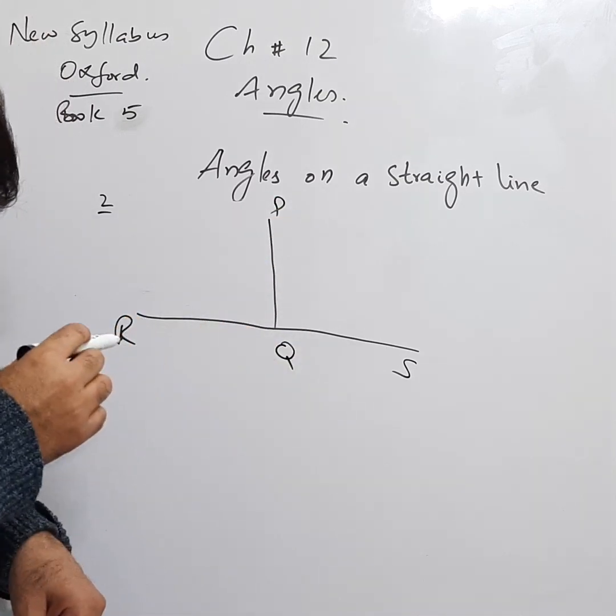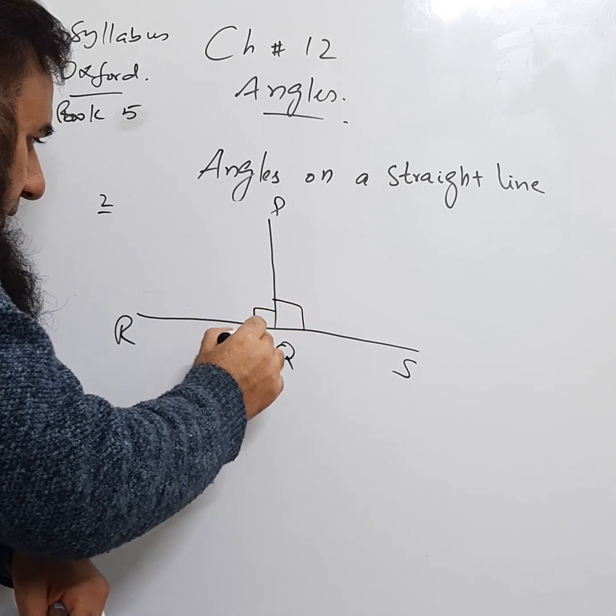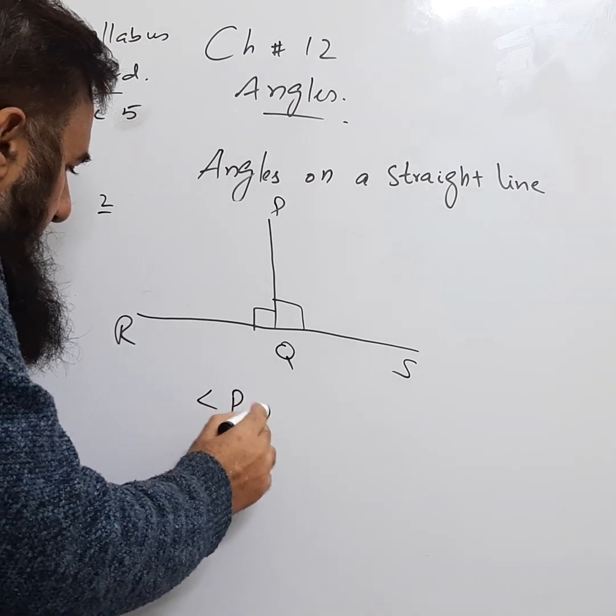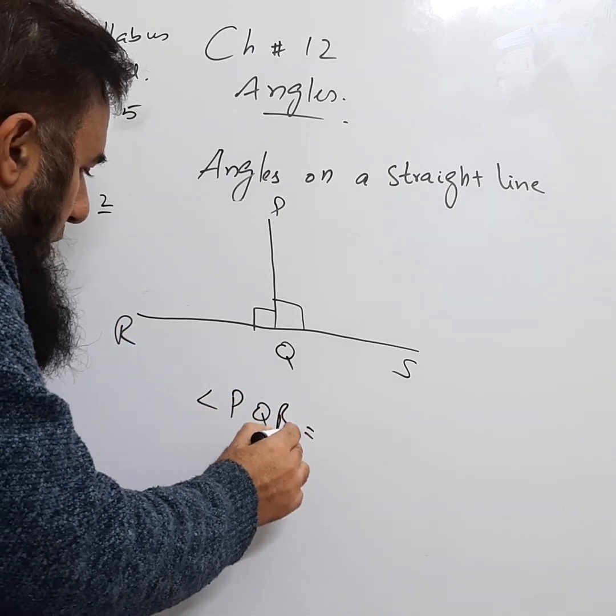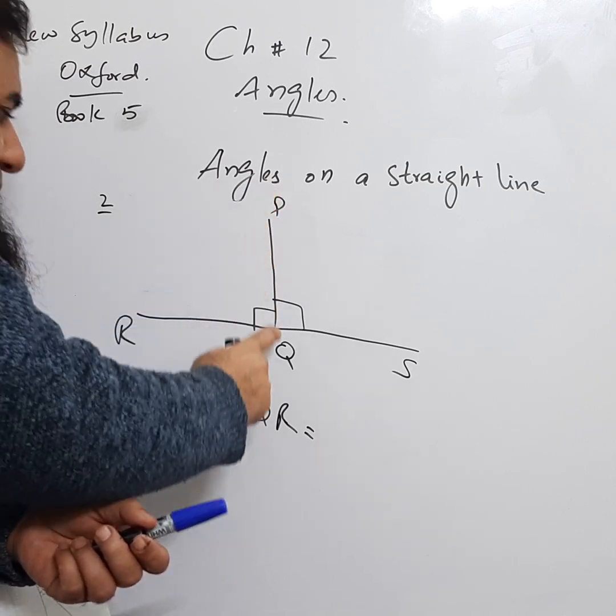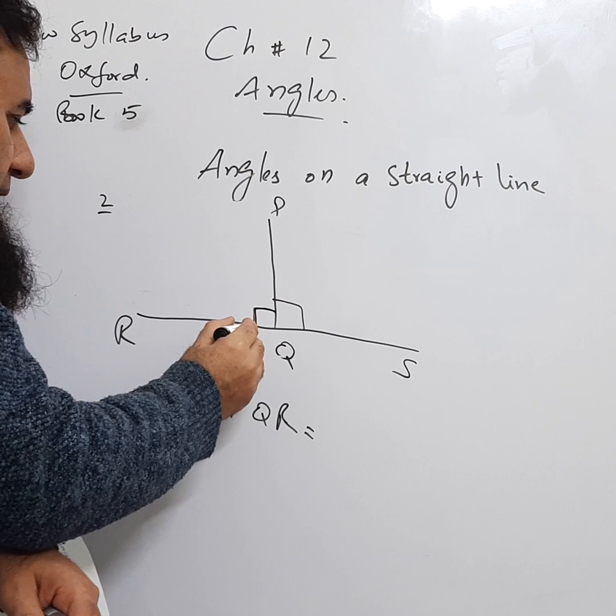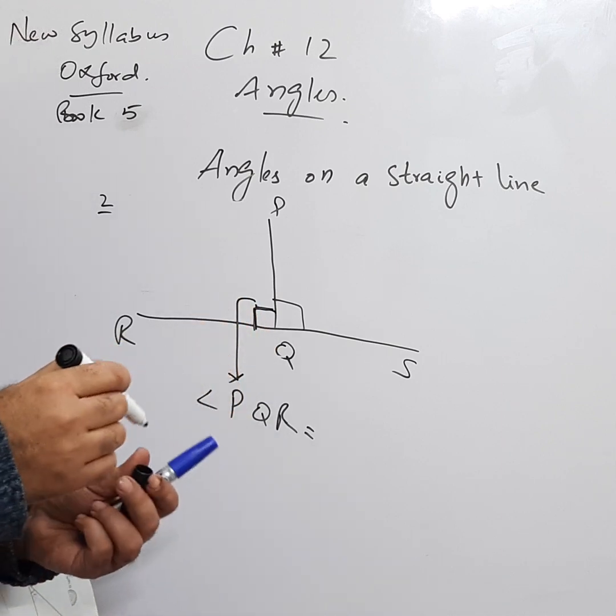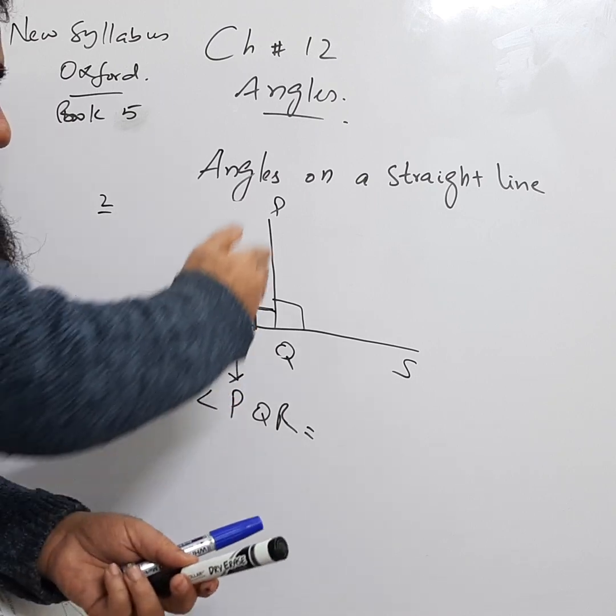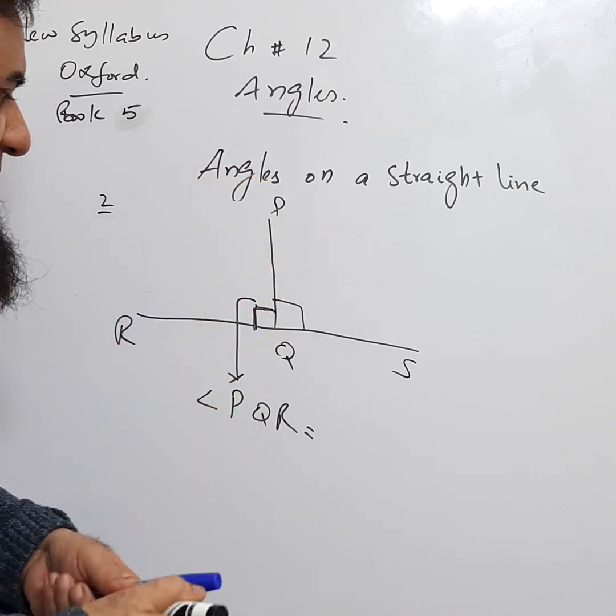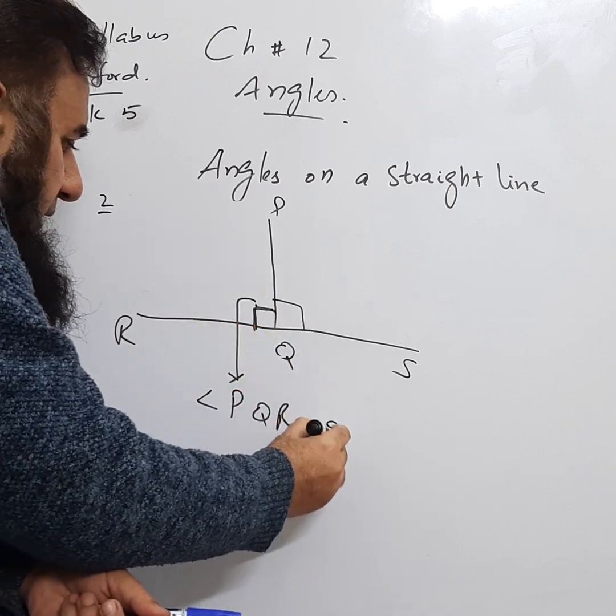This is one angle and this is the other angle. They are asking what is angle PQR. We know that when it is a straight line, it makes an angle of 90 degrees, so this one is 90 degrees.